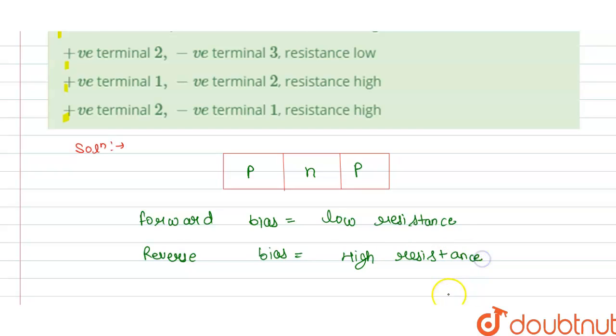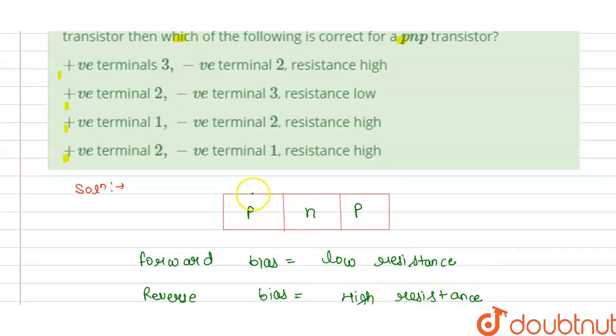So if we know that if P is positive, if N is positive and P is negative, then we have reverse bias and high resistance. And if terminal 1 is connected to positive and terminal 2 is negative, then we have forward bias and the resistance is low.